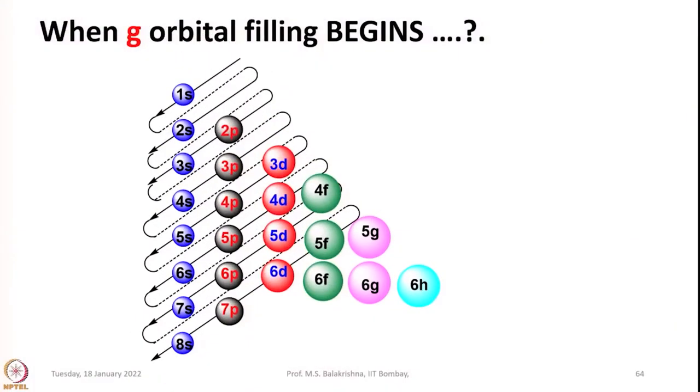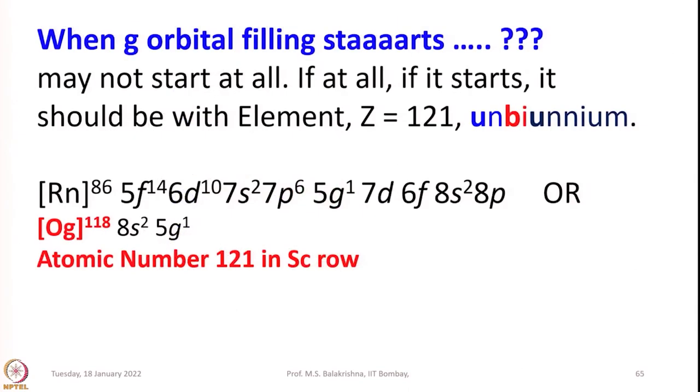So, for curiosity, when does G-orbital filling begin? Once 6d and 5f are completed, we have to consider 5g. Surprisingly, G-orbital filling may not start at all, because it is not easy to make heavier elements — they readily disintegrate into nuclei of lower atomic number and other particles. If it does start, the element occupying electrons in the G-orbital should begin at atomic number 121.